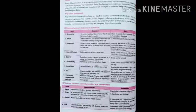Debentures can be issued at a discount, while shares cannot be issued at a discount except where they are issued as sweat equity shares. Debentures may or may not be secured by a charge on the assets of the company, while shares are not secured. Convertibility: debentures can be converted into shares, whereas shares cannot be converted into any other type of security.